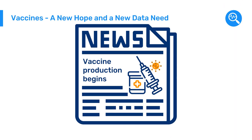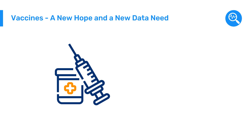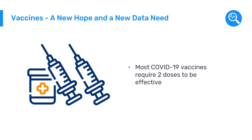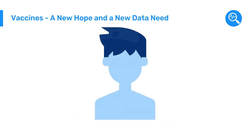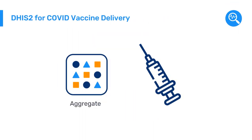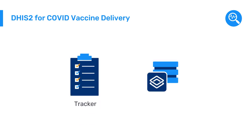By early 2021, COVID-19 vaccines started to become available in limited quantities, which led to a need for countries to plan and monitor how many vaccines were administered and to whom. Since most COVID-19 vaccines required two doses to be effective, it was necessary to keep a record of the individual people who were vaccinated to certify that they completed the full vaccine schedule and to monitor them for potential adverse effects after vaccination. Aggregate data collection was not sufficient to meet this need, so many countries used DHIS-2 to collect individual vaccination data using tracker.